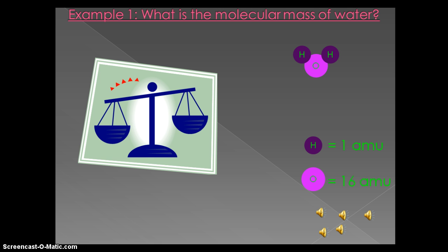Applying this to the entire molecule of water, with two hydrogen atoms at one amu and one oxygen atom at 16 amu, we take this summation. So one amu plus one amu plus 16 amus equals 18 amus. So to answer this problem, the molecular mass of water is 18 amu.